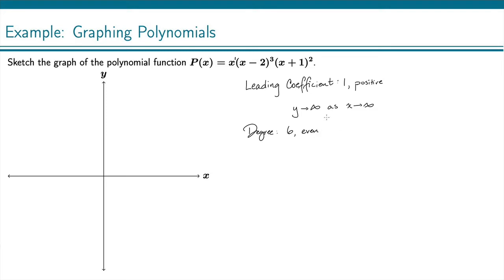And an even degree tells me that the left side of the graph is the same as the right side of the graph. So here the right side of the graph is going up. That means my left side of the graph will also be going up. So y approaches infinity as x approaches negative infinity, meaning on the left side of the graph.